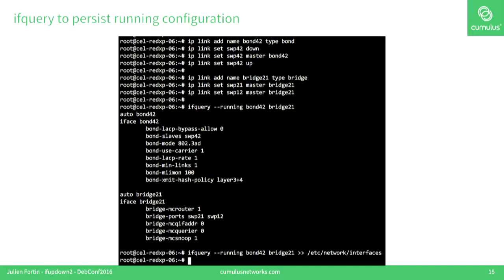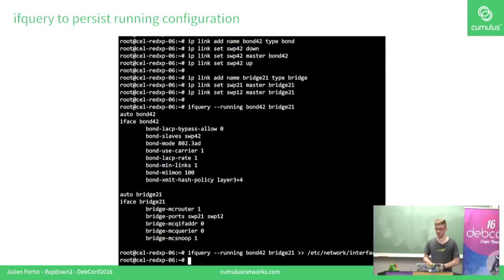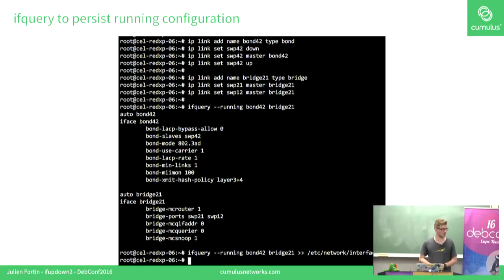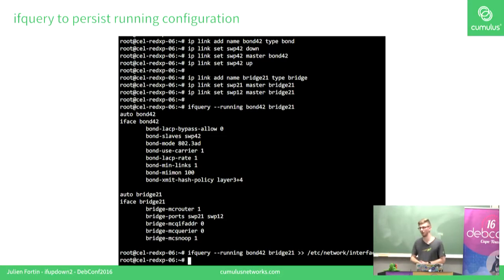Another practical use case of the new ifquery is the running option. You can create a live topology using, for example, iproute2 — here I create a bond and a bridge. Then you can use ifquery to see the live configuration of these interfaces, and then you can pipe the result of ifquery to your /etc/network/interfaces file.